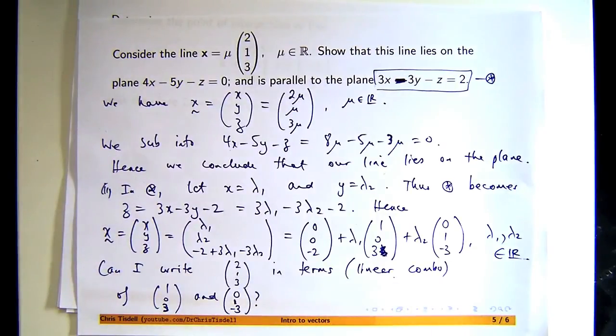What do I mean linear combo? It's just basically scalar multiplying the two vectors and then adding or subtracting them to get that. So have a look.